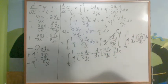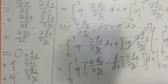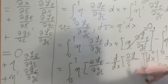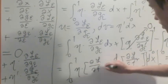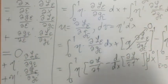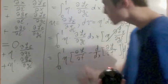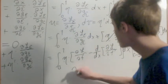Now evaluating at epsilon equals 0, all the epsilons go to 0 and all the g_epsilons go to f. We want this to be an extremum, so we want the expression to equal 0. The only way for this integral to be 0 for arbitrary eta is for the integrand itself to be equal to 0. And that's it — that's the Euler-Lagrange equation.